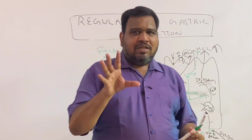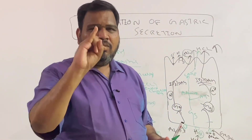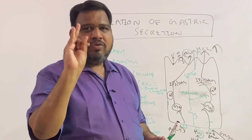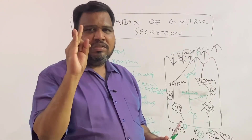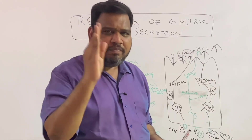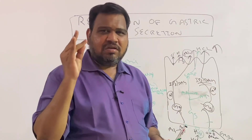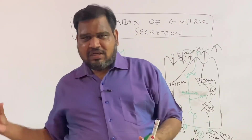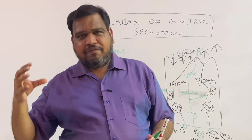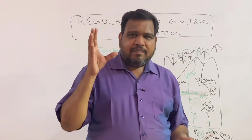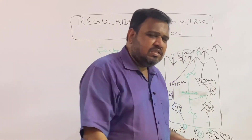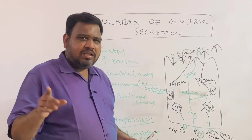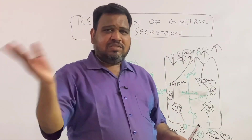To summarize: receptor one is CCKB for gastrin, receptor two is H2 for histamine, receptor three is M3 for acetylcholine. Gastrin is from G cells of the antrum, histamine from enterochromaffin-like cells. Somatostatin from D cells of the antrum inhibits HCl secretion. Sympathetic inhibits HCl secretion, while parasympathetic stimulates HCl secretion.